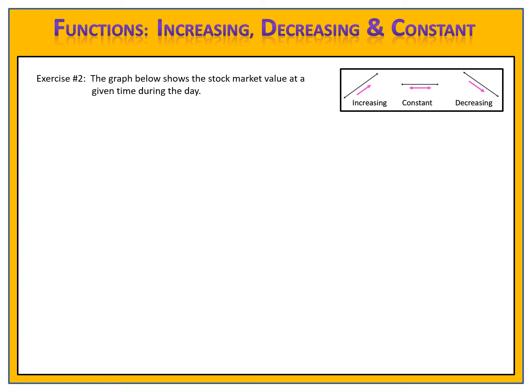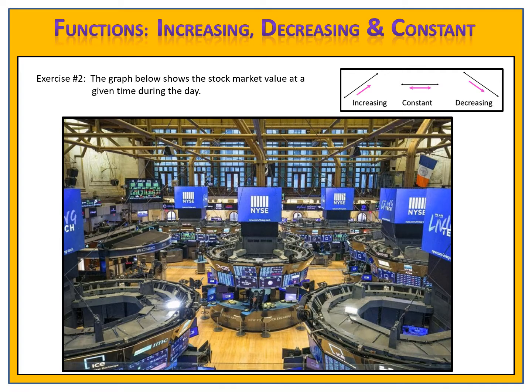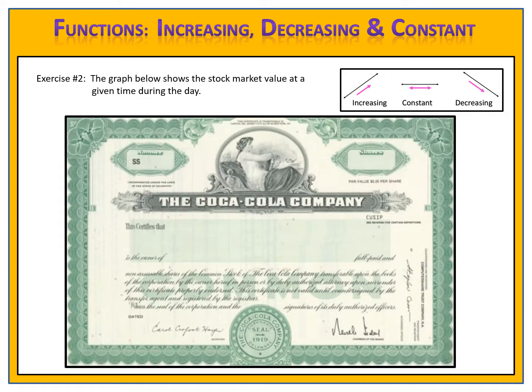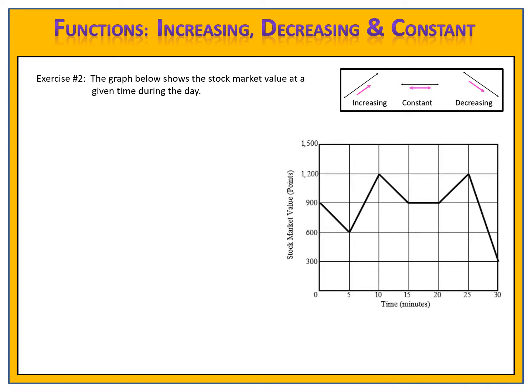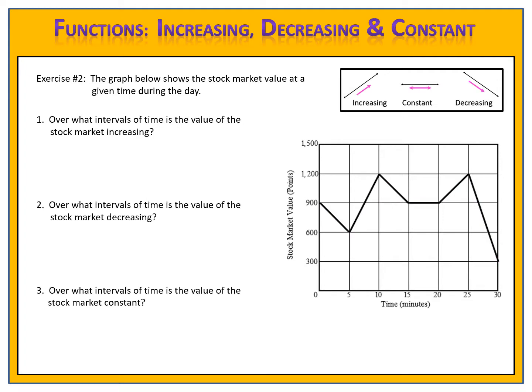In exercise two, we have a graph that shows the value of the stock market over a period of time on a day. The stock market is a place where you can buy shares of companies. Suppose you want to own a piece of the Coca-Cola company — you can buy a share of Coca-Cola stock and own a piece of the company. Here's the graph showing the value of the stock market over a 30-minute period. Please pause the video and see if you can write these intervals. When you're ready, come back and we'll compare answers.